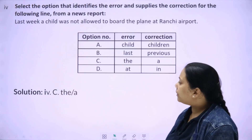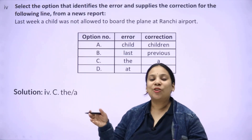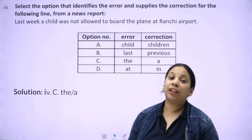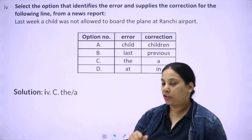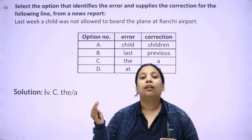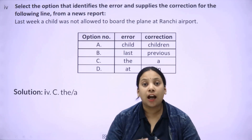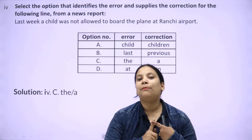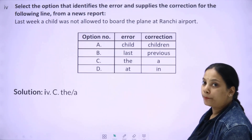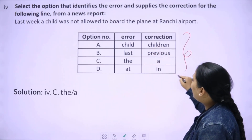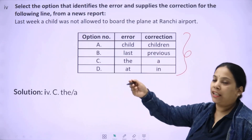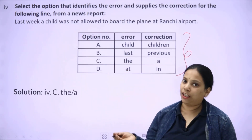Moving ahead — the error and omission question. Until now these used to come as open-ended questions, but now they come with options, which is a great advantage for you. You just need to choose one. The pattern has changed — earlier error and omission and indirect speech conversion used to come, but now MCQs and fill in the blanks also come. Question: 'Last week a child was not allowed to board the plane at Rachi airport.' You need to identify the error and correction. Option: 'child' vs 'children' — 'children' will not come because 'a child' is mentioned. 'A' is the article used.